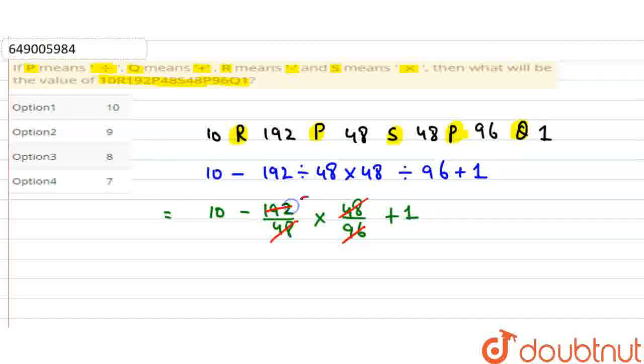96 to 192, it will be 2 times. What will be 10 minus 2 plus 1? Which will be 11 minus 2, which will be 9. Our answer is 9. In option 2, we are given 9, so option 2 will be the correct answer to this question. Thank you.